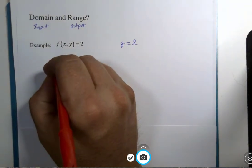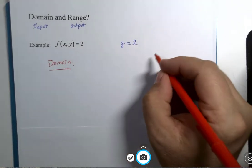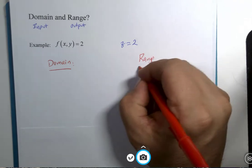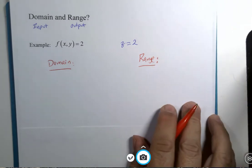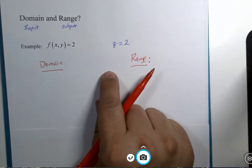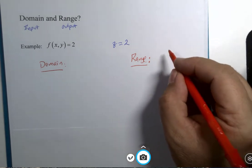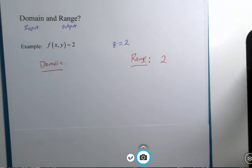We'll have our domain and we'll have our range. This is one of those cases where the range is really simple. I mean, it's one number, it's two. And it's two only.